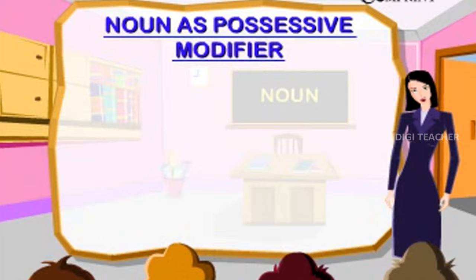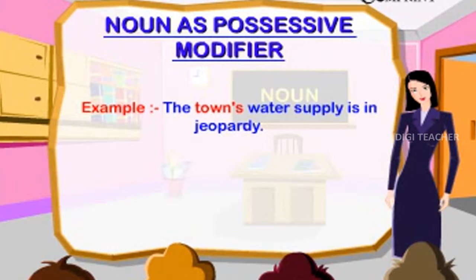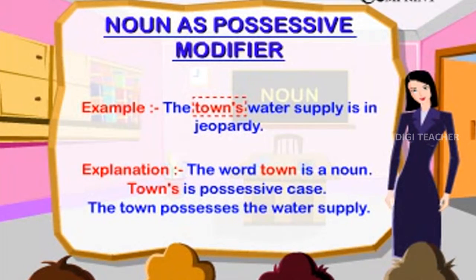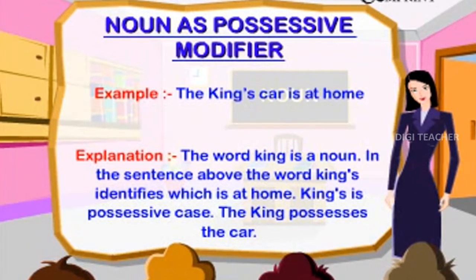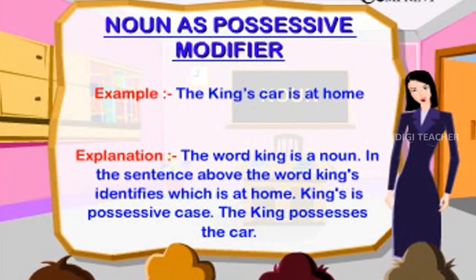Noun as Possessive Modifier. Example: The town's water supply is in jeopardy. The word 'town' is a noun; 'town's' is the possessive case — the town possesses the water supply. Example: The king's car is at home. 'King' is a noun; 'king's' identifies which car is at home. King's is the possessive case — the king possesses the car.